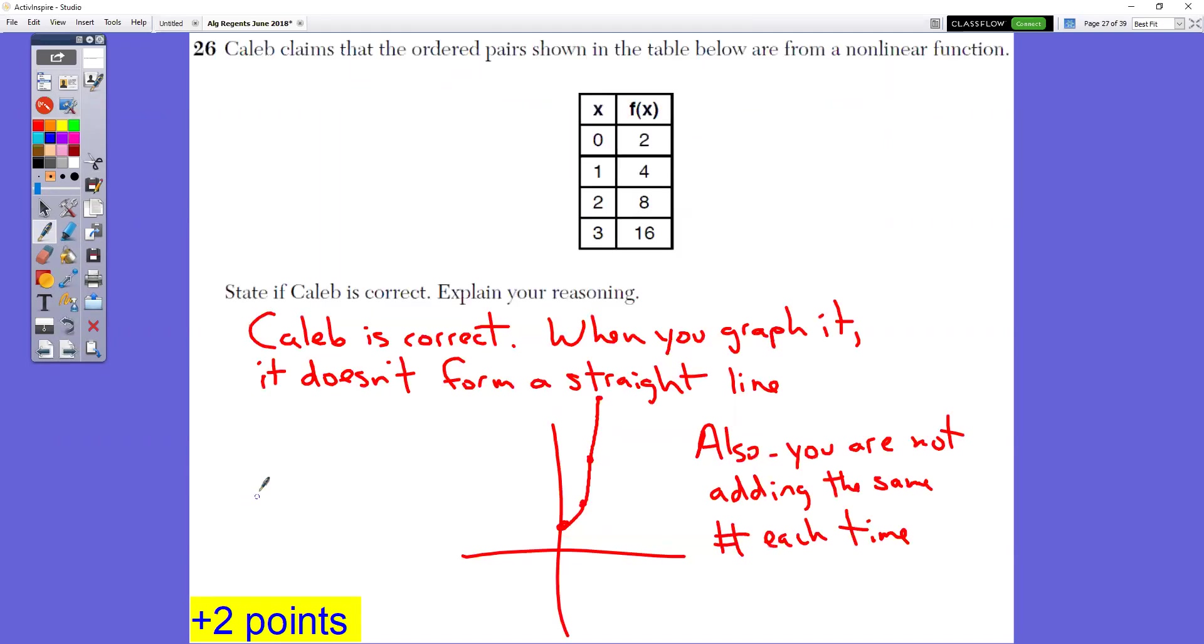In question number 26, Caleb claims that the ordered pairs shown in the table below are from a non-linear function. So that means when you graph it, it does not form a line. State if Caleb is correct, explain your reasoning. Caleb is correct. When you graph it, it does not form a straight line. Notice how I drew a picture of the points. This clearly forms a U-shaped type graph.